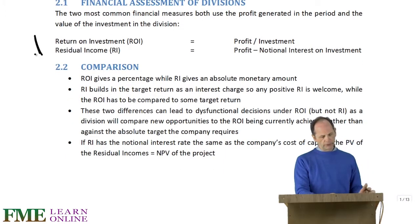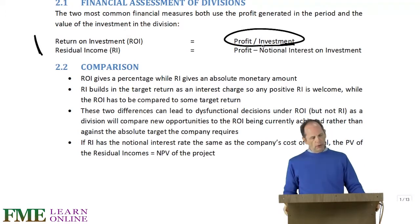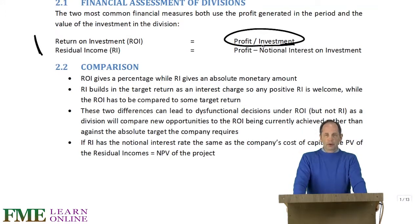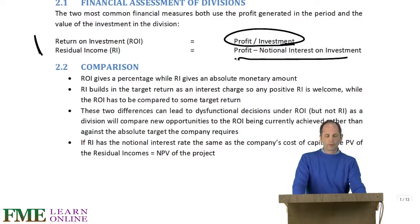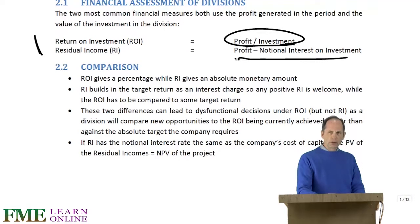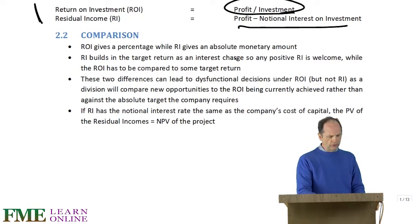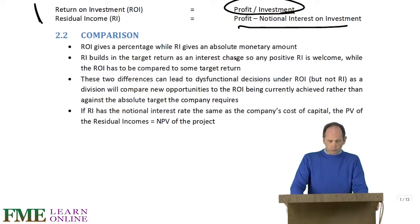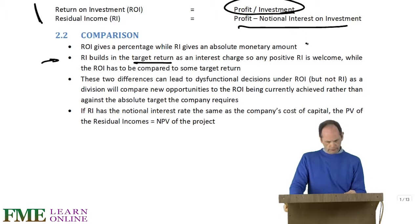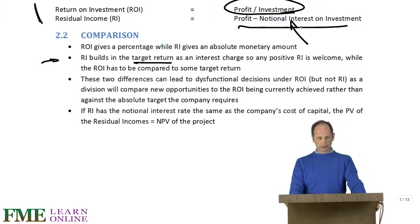Return on Investment simply looks at the percentage return made this year in terms of profit over the investment which has been put in. Whereas Residual Income looks at the profit and takes off a notional interest charge on the investment. ROI gives a percentage, where Residual Income gives an absolute amount of money. Residual Income does build in the target return inside the notional interest, whether it be 10%, 15%, or whatever.